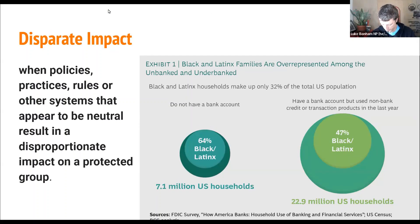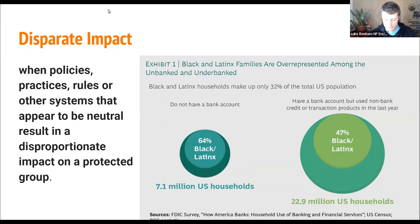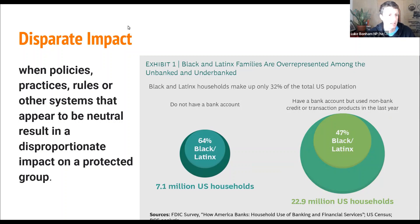To understand inequities in the credit system, it's helpful to look through a lens of disparate impact. Disparate impact occurs when policies, practices, rules, or other systems that appear neutral result in a disproportionate impact on a protected group. For example, although access to bank accounts is open to anyone, Black and Latinx households make up a much larger percentage of the unbanked and underbanked populations.